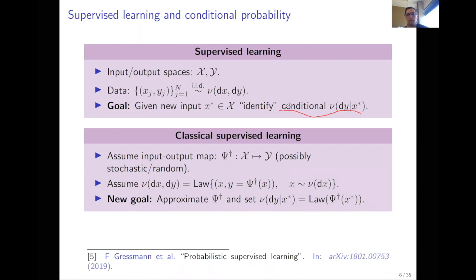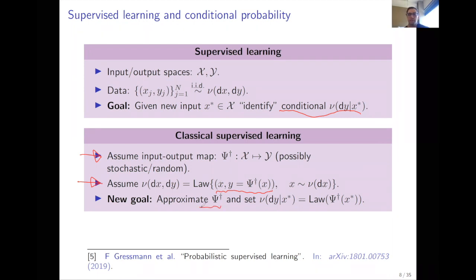In classic supervised learning, you assume there is some map psi-dagger and that the joint measure has a specific form: x comes from a marginal independent of y, and y equals psi-dagger of x. Your goal is to approximate psi-dagger, after which you can set the conditional to be the law of psi-dagger of x-star. The viewpoint we take is different: we use measure transport without assuming the existence of such a psi-dagger.